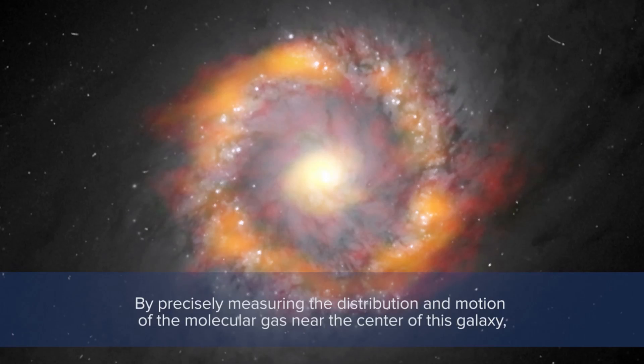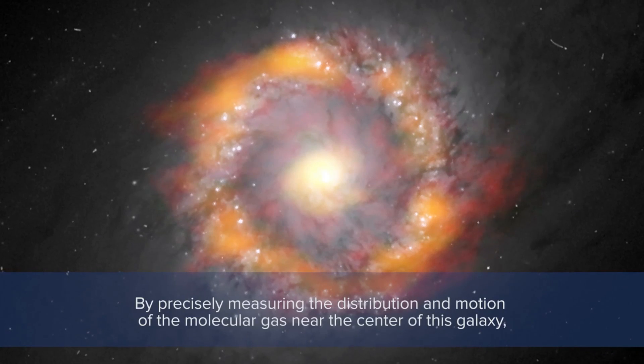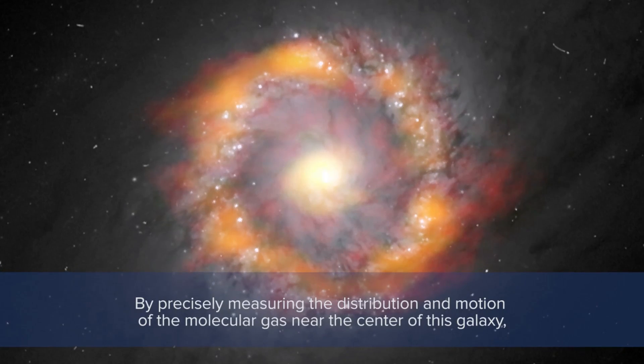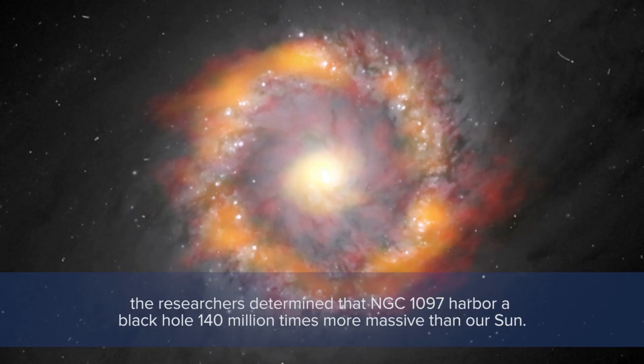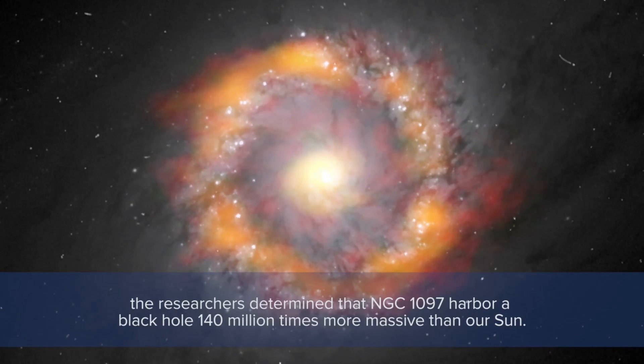By precisely measuring the distribution and motion of the molecular gas near the center of this galaxy, these researchers determined that NGC 1097 harbors a black hole 140 million times more massive than our Sun.